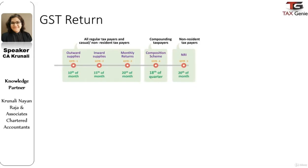Let us now look at which return needs to be filed by whom and on what date. The first return is GST Return 1, which is for outward supplies, i.e. sales. This is due by the 10th of the next month and it is to be filed by all regular taxpayers and casual and non-resident taxpayers.